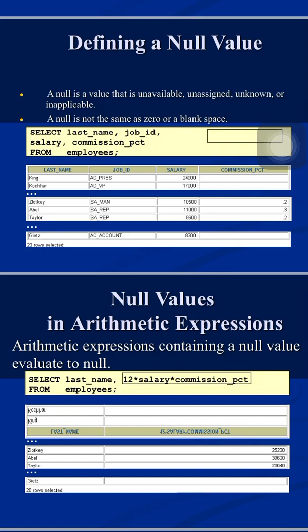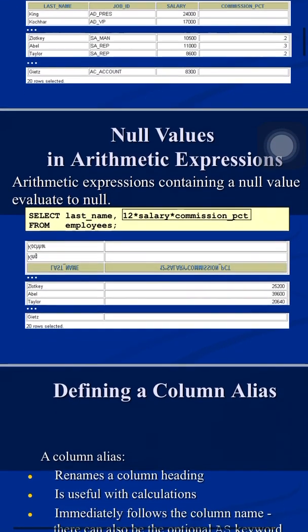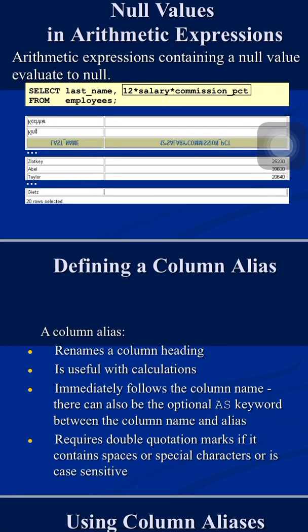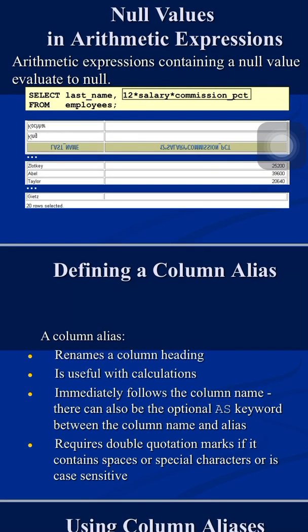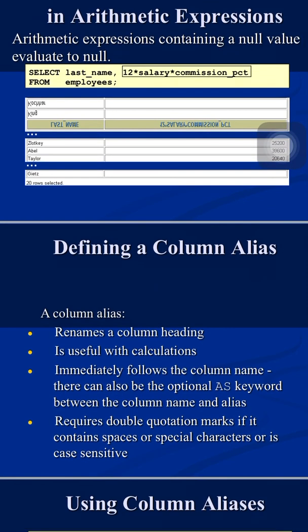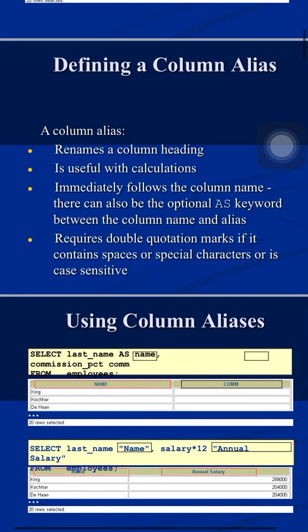By default, everything is printed in capital letters in the output. If you want to give a different name to a column heading, you use a column alias. A column alias renames the column heading in the output window only — it does not rename the column in the original table. It is especially useful with calculations, since otherwise the entire expression is printed as the heading. You specify an alias by writing it after the column name, with an optional AS keyword between them.